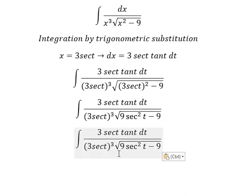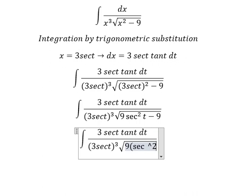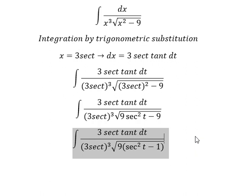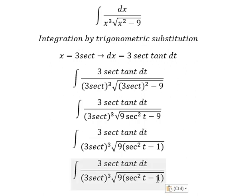For the square root part, we have 9 secant squared t minus 9. We can factor out 9, giving us secant squared t minus 1. This we change to tan squared t.